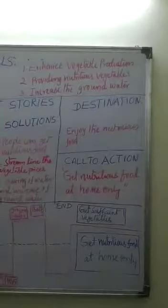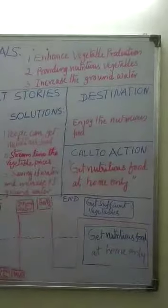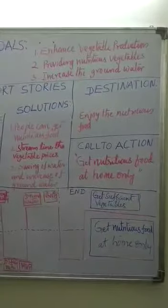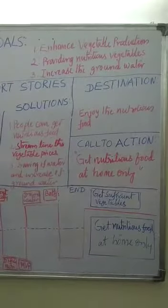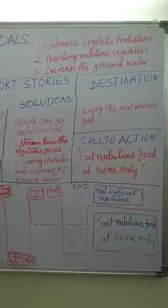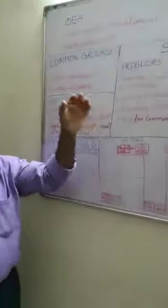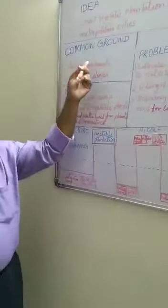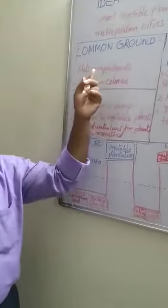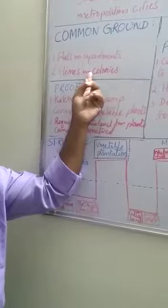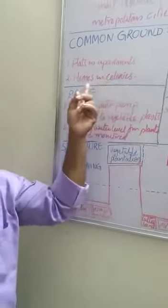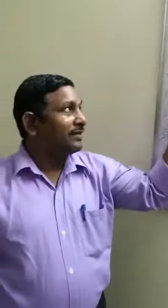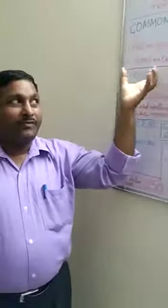To solve these problems, my goals are to enhance vegetable production, to provide nutritious vegetables to common people in metropolitan cities, and at the same time to increase the groundwater level. This application is meant for common people living in flats and apartments in colonies.